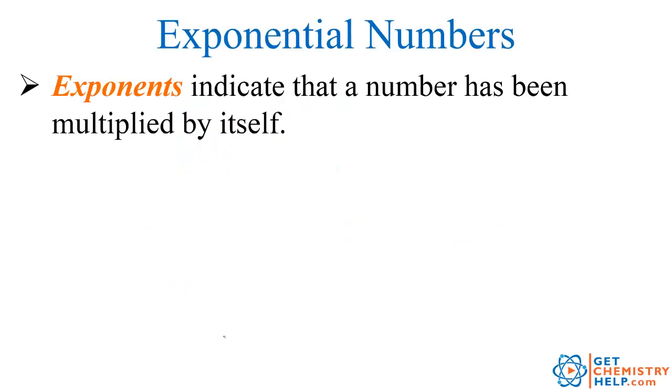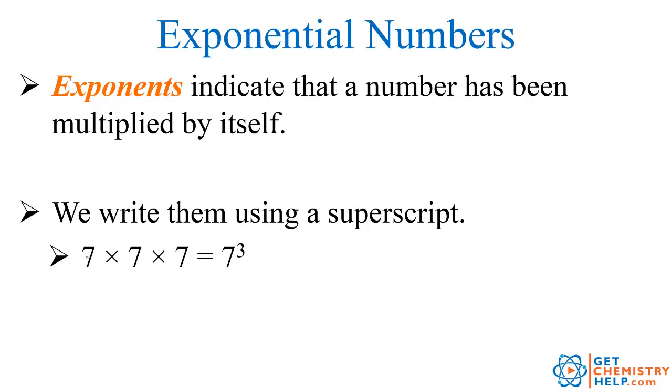Exponents indicate that a number has been multiplied by itself. We indicate that by putting a superscript after the number that was multiplied repeatedly. For example, if I took 7 times 7 times 7, that's three 7s. I could write that as 7 to the third power, or 7 cubed. This 3, the superscript, is the exponent that indicates 7 was multiplied by itself three times.